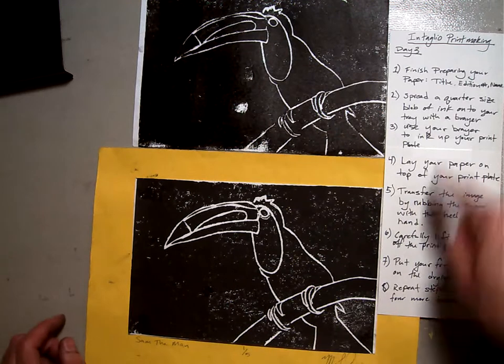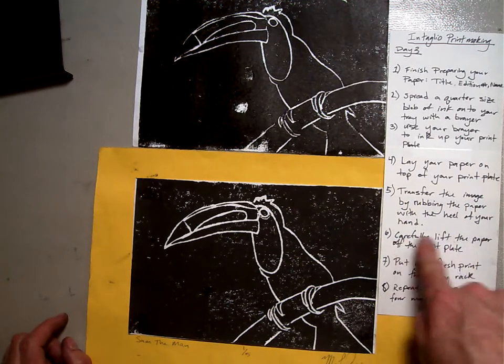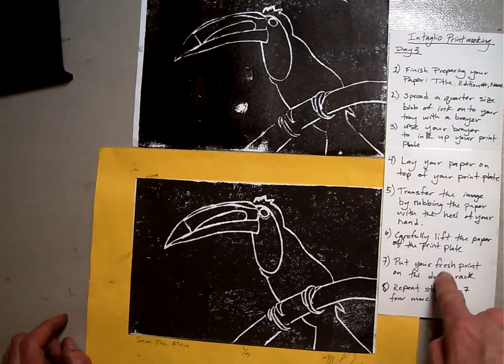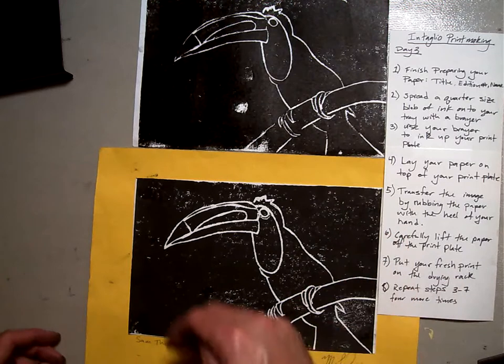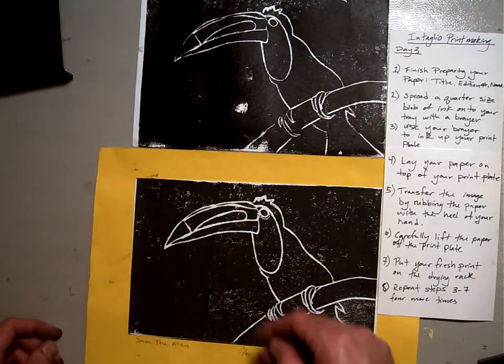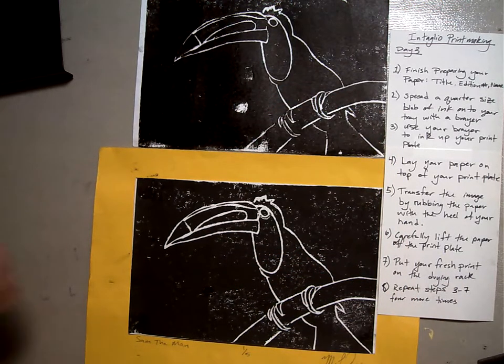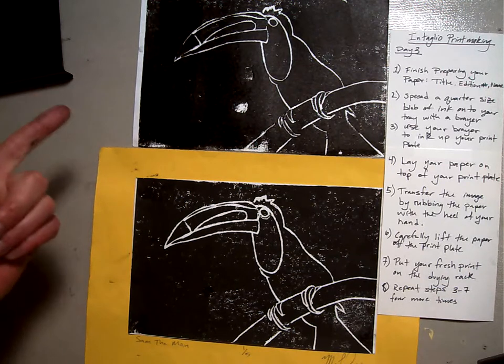Once you've got all that done, carefully lift your paper off, and put it into the drying rack. And then repeat steps three through seven four more times. So you've got your four white pieces of paper. And then next week we'll start our one colored piece of paper and our special edition.